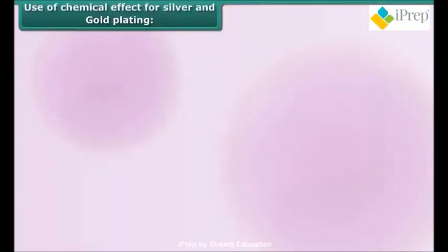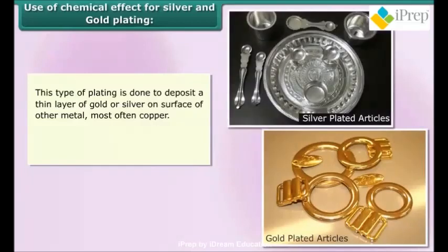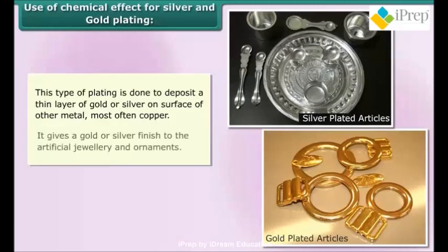Use of chemical effect for silver and gold plating: This type of plating is done to deposit a thin layer of gold or silver on the surface of the other metal, most often copper. It gives a gold or silver finish to artificial jewelry and ornaments.